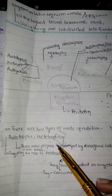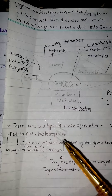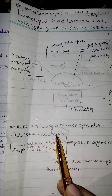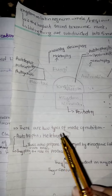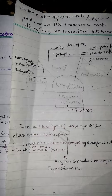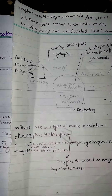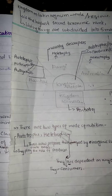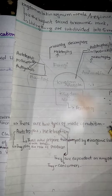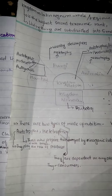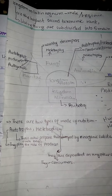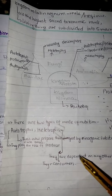Let me discuss about the mode of nutrition. As previously I told you, there are two types of mode of nutrition: number one is autotrophic and number two is heterotrophic. Autotrophs are those who prepare their food on their own and they play the role of producer. Heterotrophs are those that are dependent on other organisms and they are consumers.